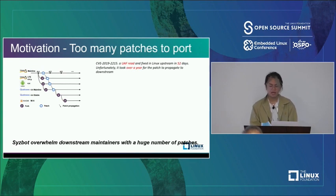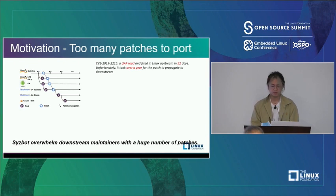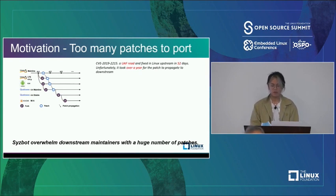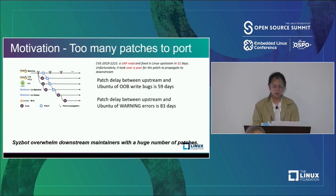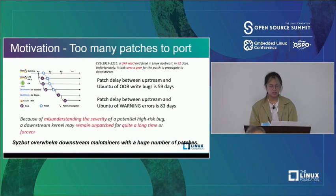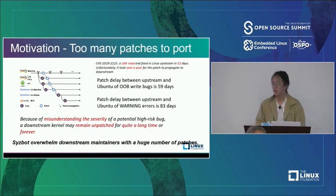In fact, it was only when a bad actor was caught exploiting this vulnerability in the wild that Google started to realize its severity and obtained a CVE number. The maintainer did not know the correct security impact of the bug. If a bug clearly shows a critical impact like out-of-bounds write, the patch propagates to distributions sooner than one that doesn't show its impact, like a warning. Because of misunderstanding the severity of a potentially high-risk bug, a downstream kernel may remain unpatched for a long time or even forever.